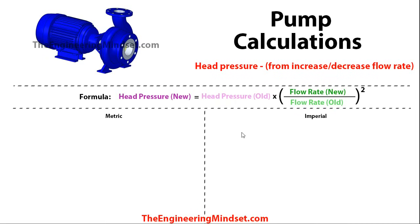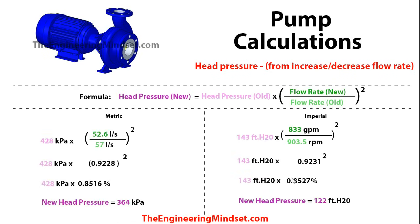We'll also look at head pressure and how to calculate it should you increase or decrease the flow rate. The formula is: new head pressure equals the old head pressure multiplied by the new flow rate divided by the old flow rate — and make sure you square the number you get from that division. Doing the division first and then squaring gives you your ratio or percent. Multiplying that out, you again arrive at 364 kPa or 122 feet of water.